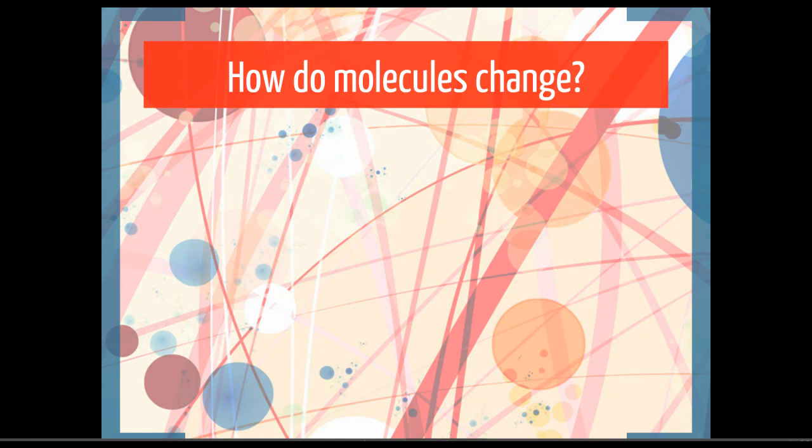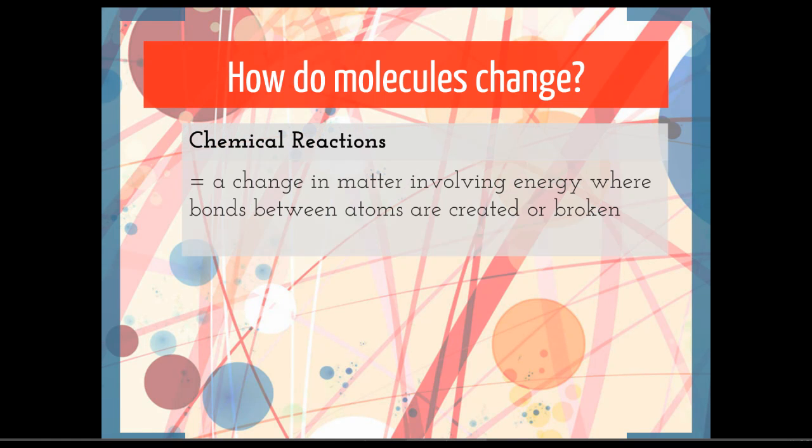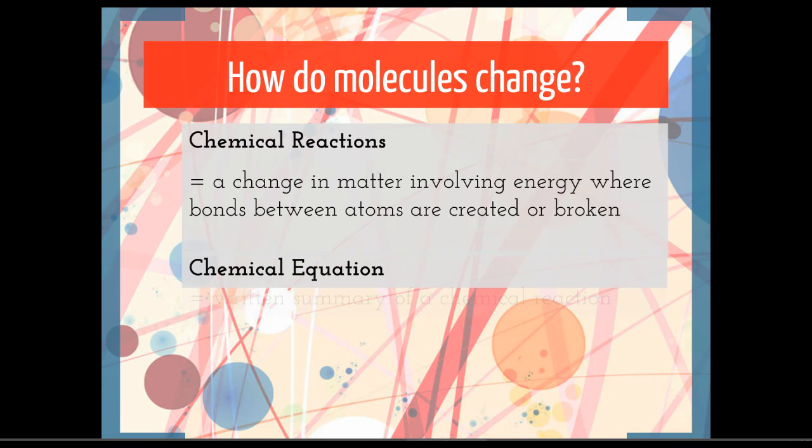So how do molecules change? They change through chemical reactions, and a chemical reaction is defined as a change in matter involving energy where bonds between atoms are created or broken. We use chemical equations as a written summary of a chemical reaction to explain which molecules are reactants bumping into each other and then what's the product of that. Are they building something bigger or are they coming apart?